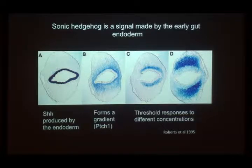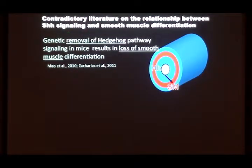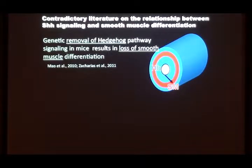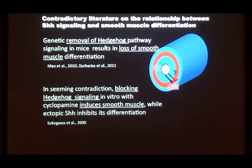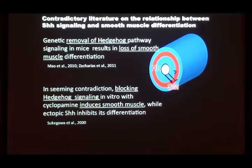Prior to our thinking about this, other laboratories had investigated the role of hedgehog in gut development. Hedgehog has been knocked out, and also the downstream signaling molecule Smoothened. Andy McMahon and Phil Beachy's laboratories both showed that if you remove the hedgehog pathway, you get a loss of smooth muscle — meaning hedgehog is required to make smooth muscle. But the literature was confusing because other investigators in Japan, looking in the chick system in vitro, got the opposite result: if you block hedgehog with cyclopamine they got more smooth muscle, and if they added extra hedgehog they lost smooth muscle entirely. So more hedgehog was getting rid of muscle, yet hedgehog appeared necessary to make muscle — a seeming contradiction.